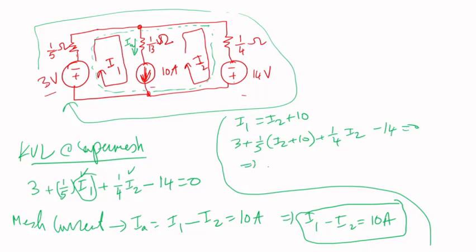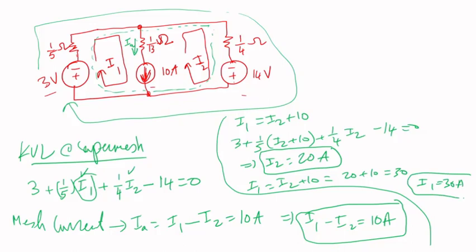So if I solve for I₂, then I get I₂ is equal to 20 amps. Then I go back to, I know I₁ is equal to I₂ plus 10, so 20 plus 10 is 30. So I₁ is equal to 30 amps.